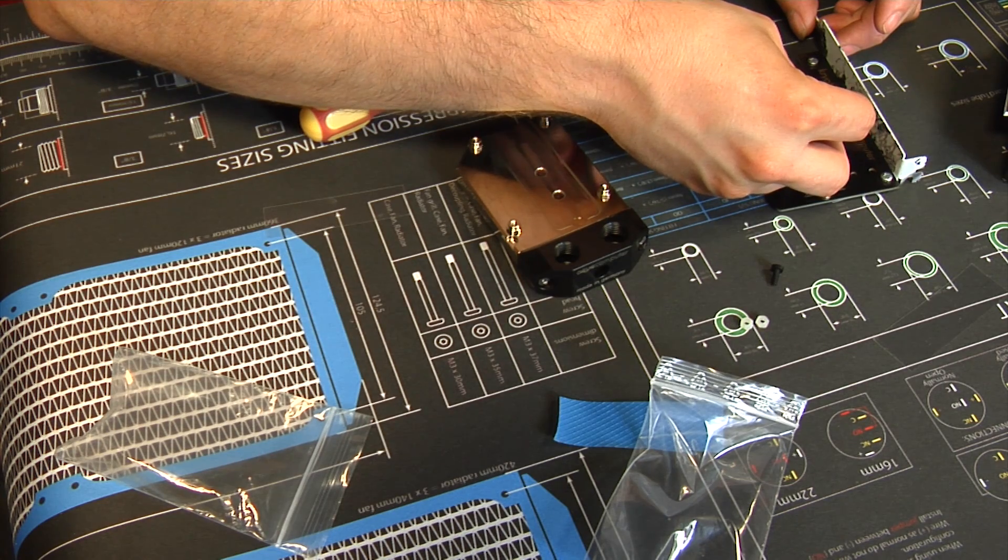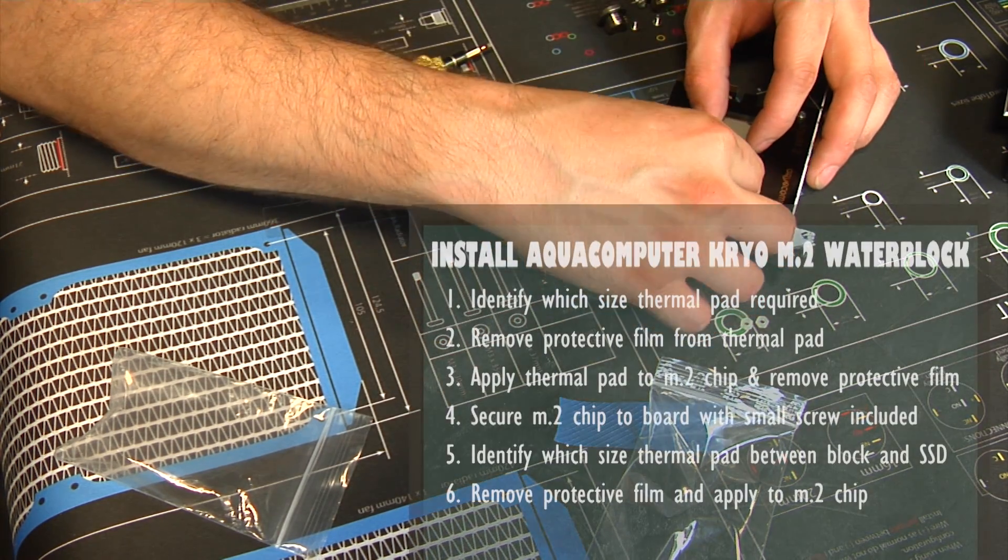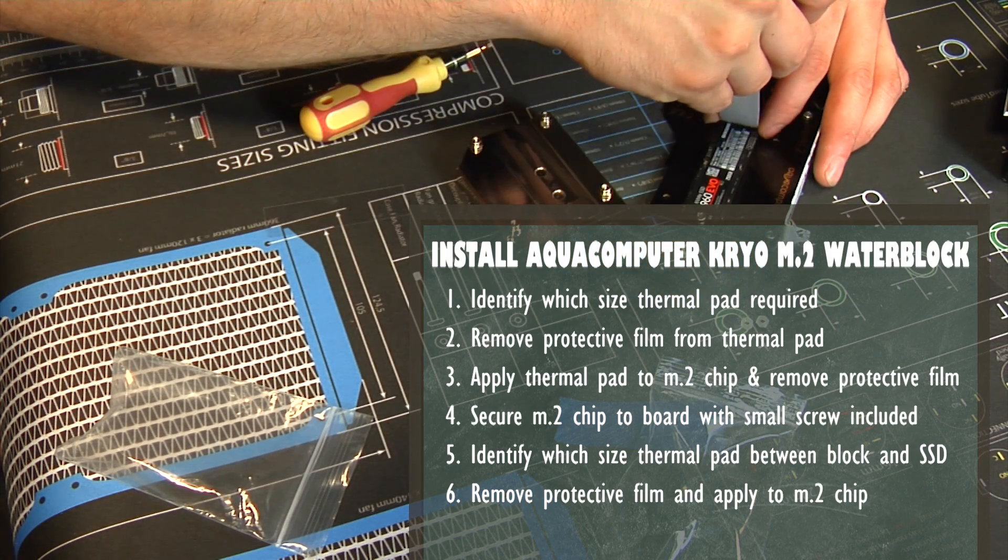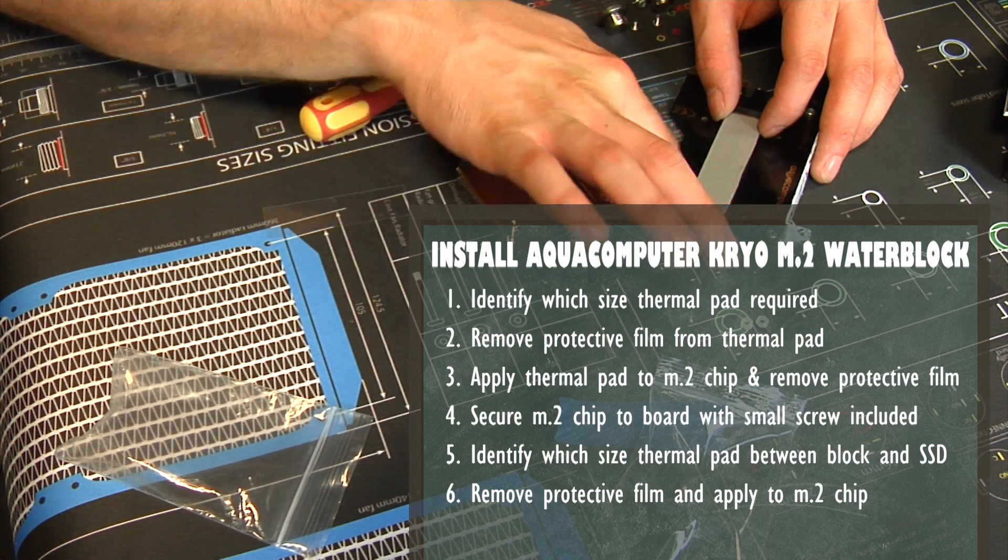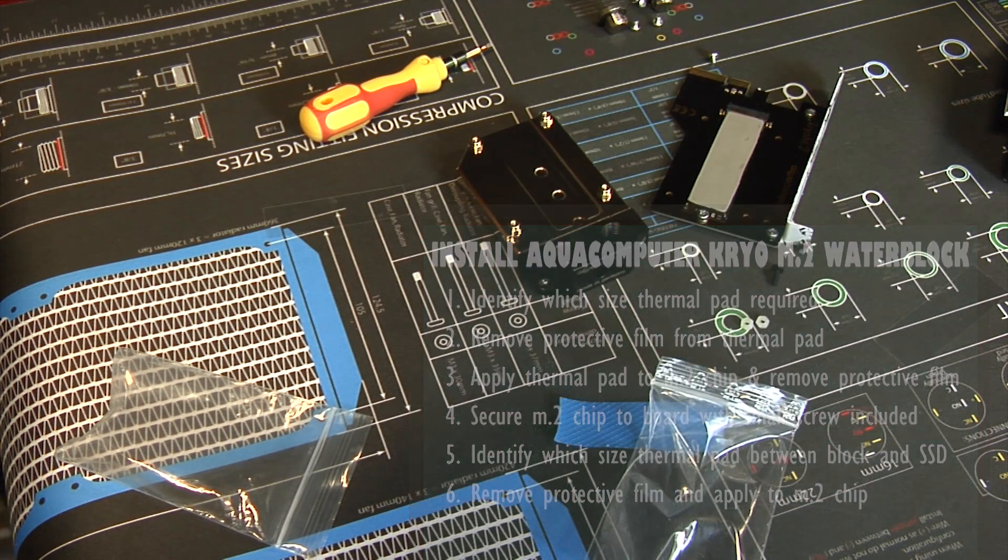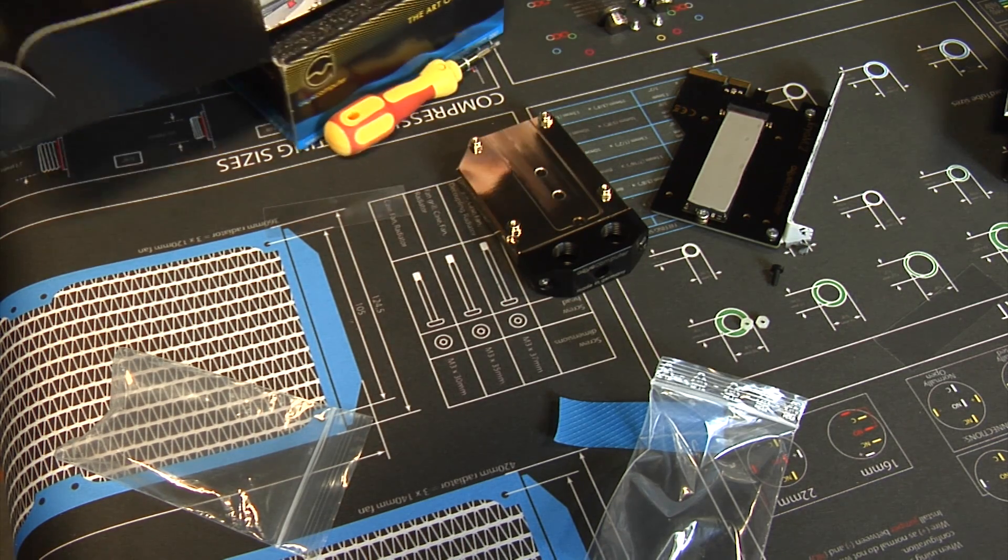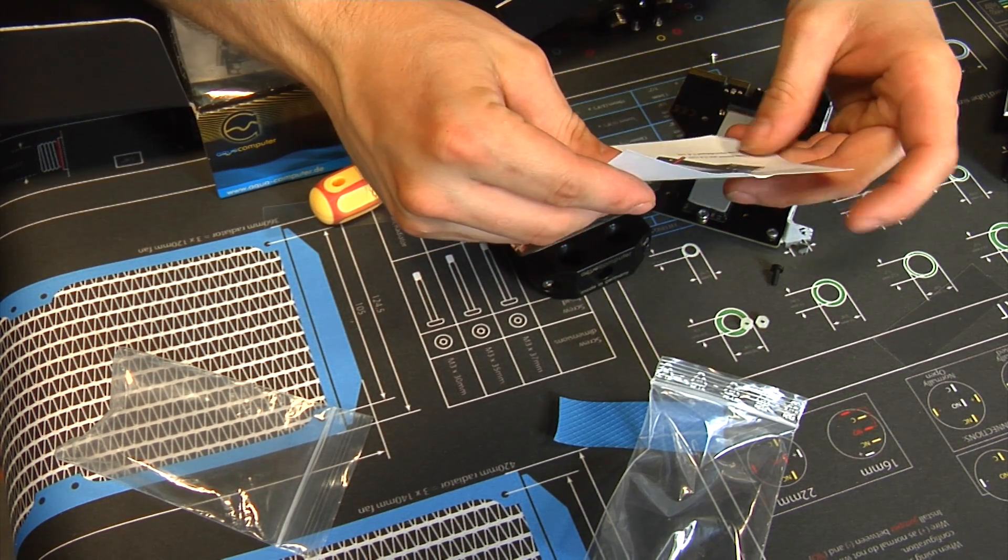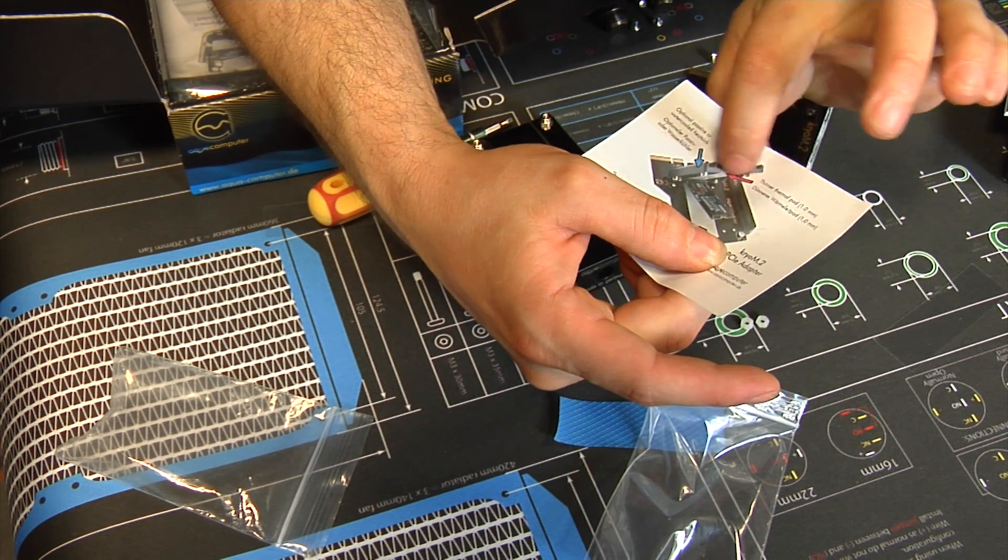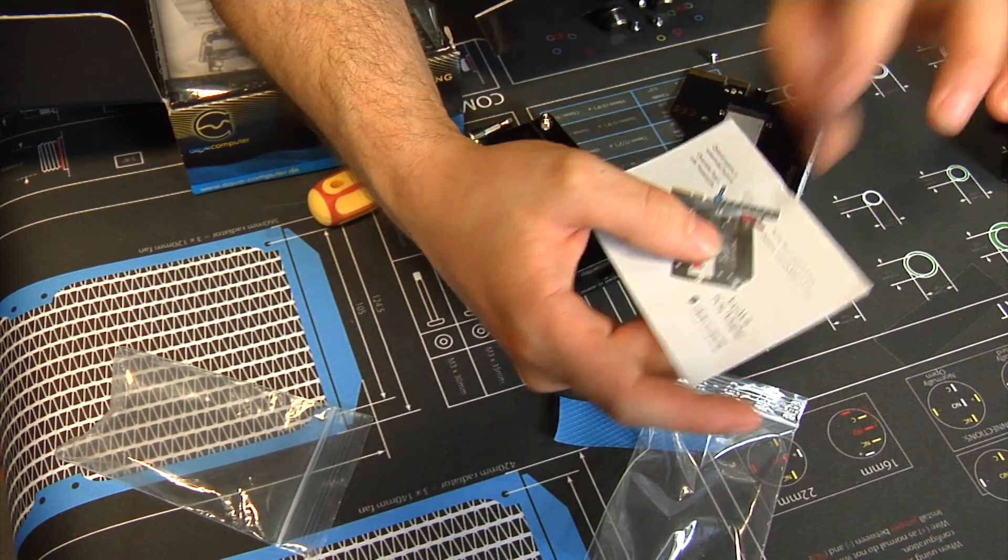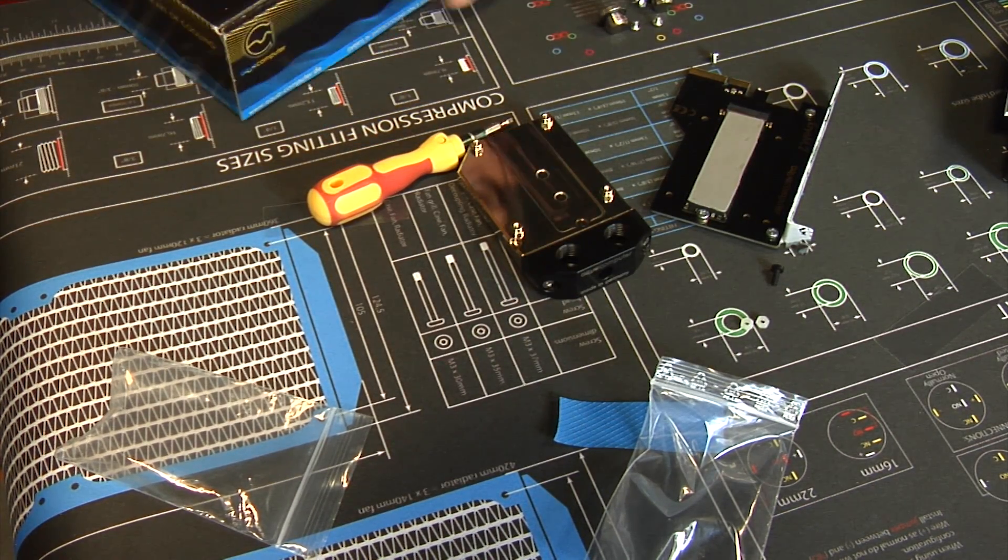So, what I'm going to do is, I'm going to put the thermal pad on the chip itself first. I know a lot of people, or not a lot of people, but the instructions, I think, say to put it on the block first and then the chip. I'm actually going to double check that because I don't think that that's right. Yeah, it kind of shows that they're putting the thermal pad on the top part first and then sandwiching together. I'm not a fan of that.